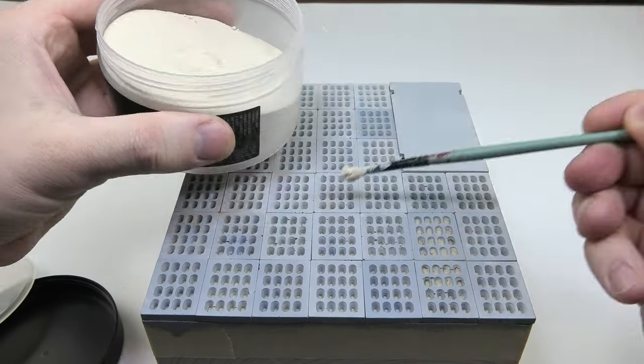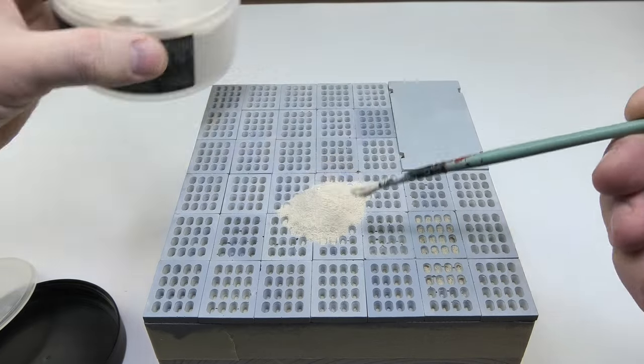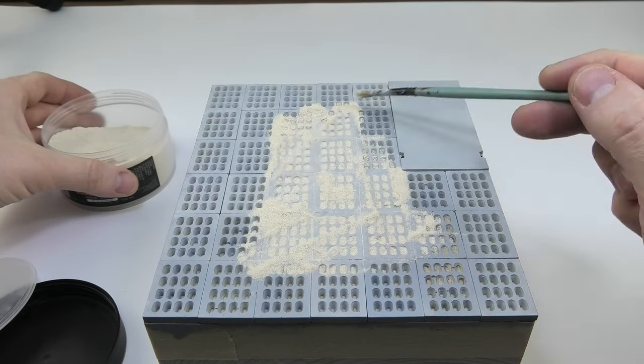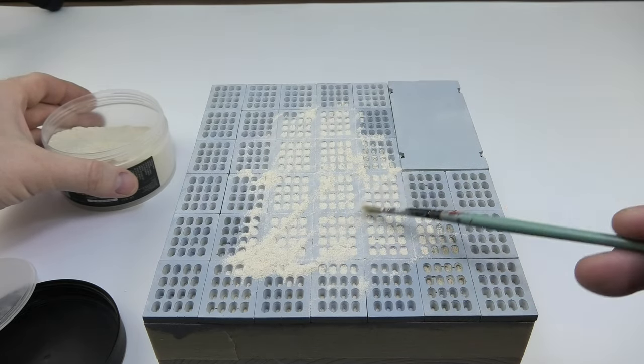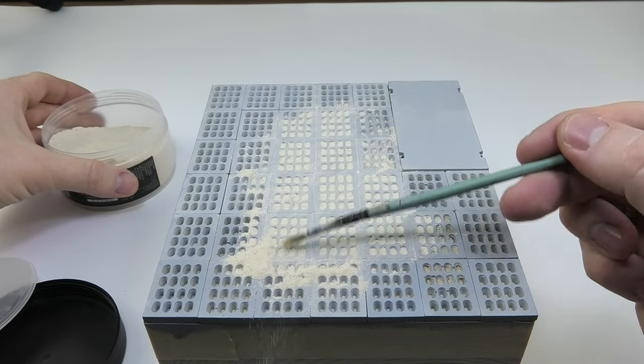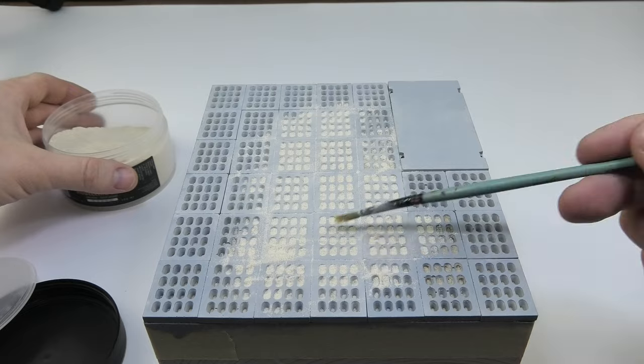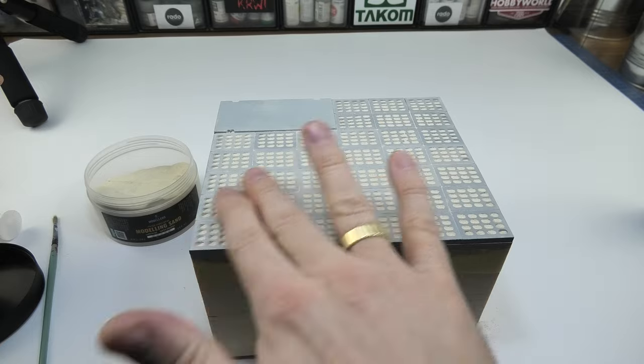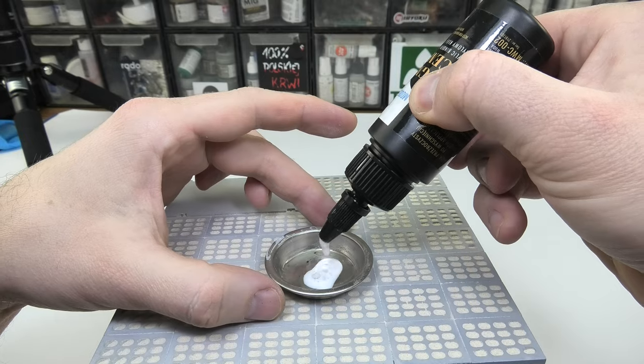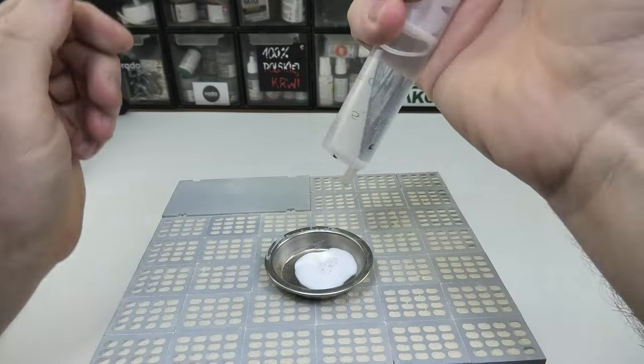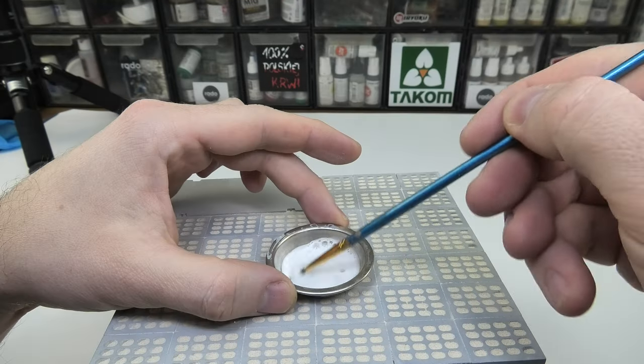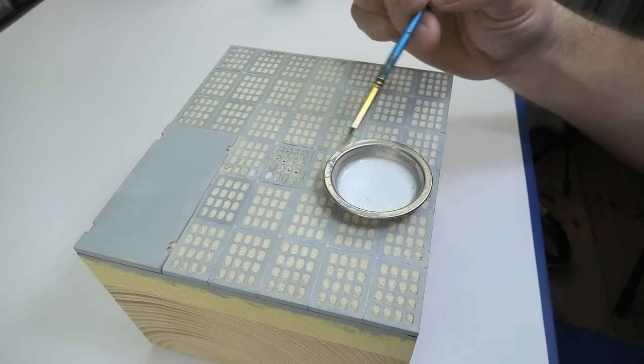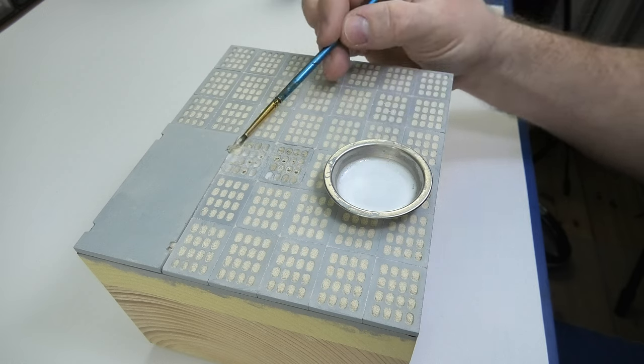Super fine sand is perfect for this. I spread it over the entire surface. The diluted pigment cement served as a fixture to keep it in place. Here and there the air bubbles prevented the sand from drying well but I will fix that in a moment, as soon as the glue sets better.